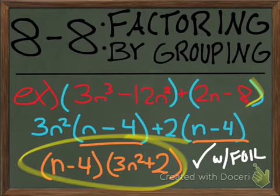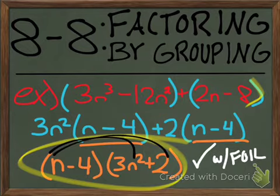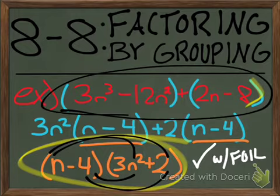And of course you can always foil it back together and check your answer by just doing first outer inner last, and when you do that correctly you would wind up getting what you originally started with.